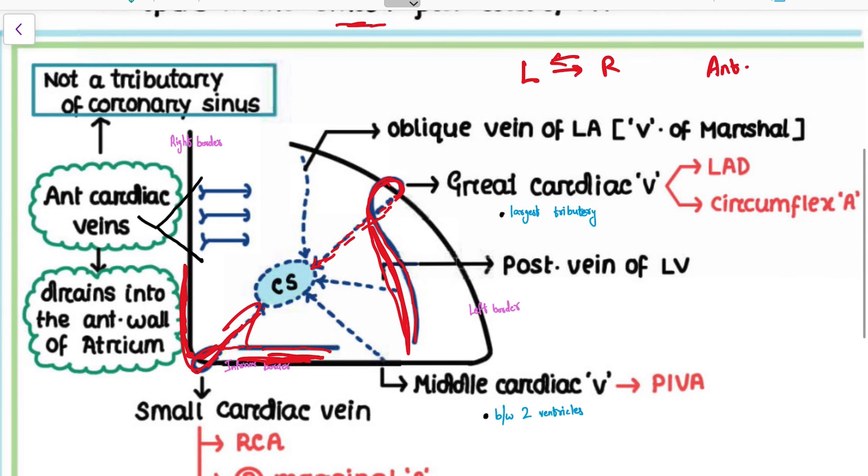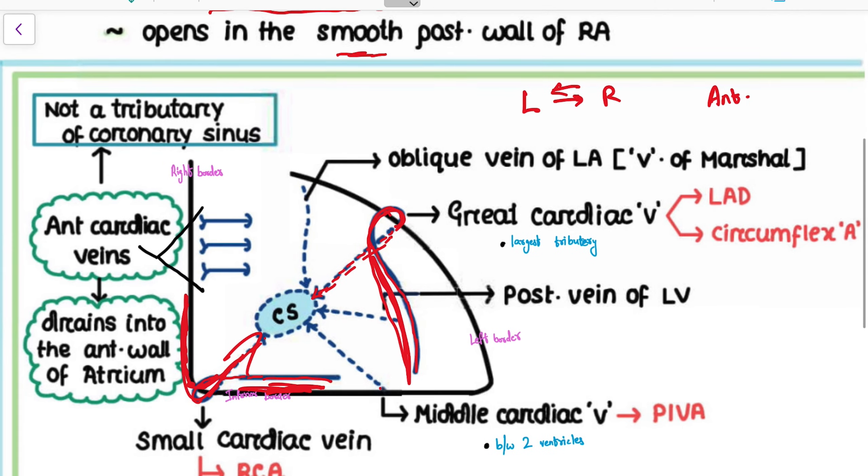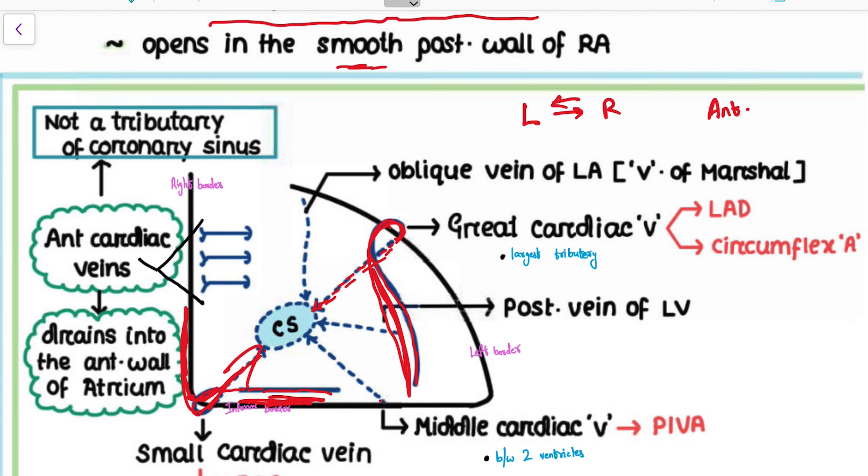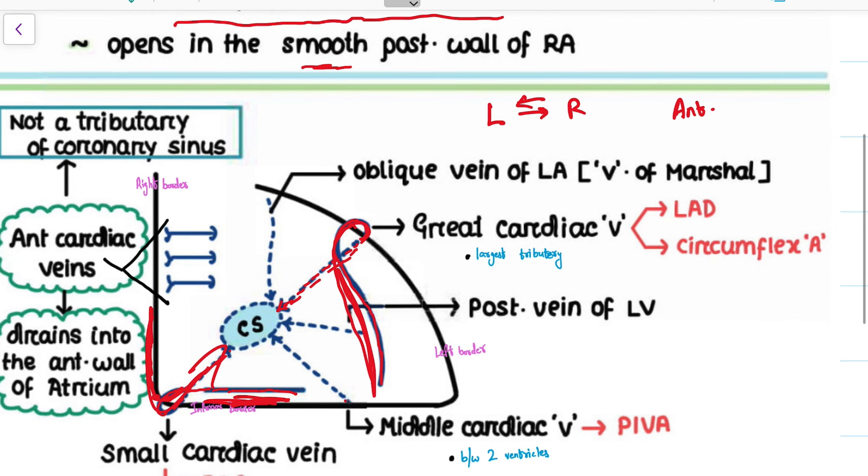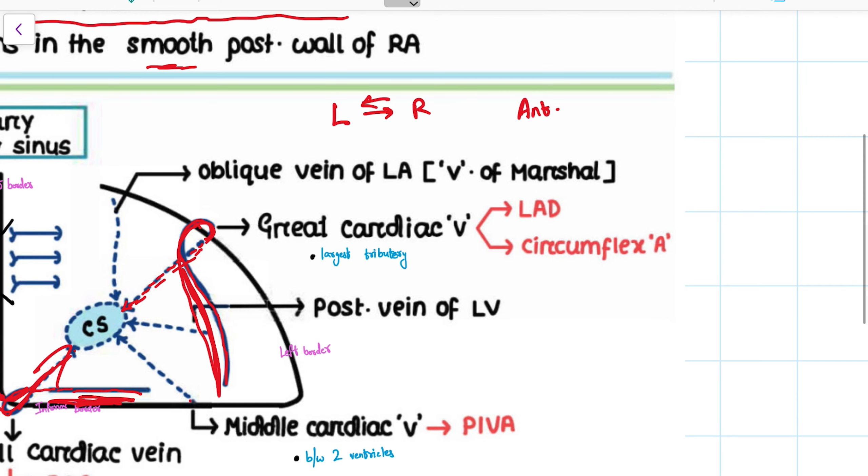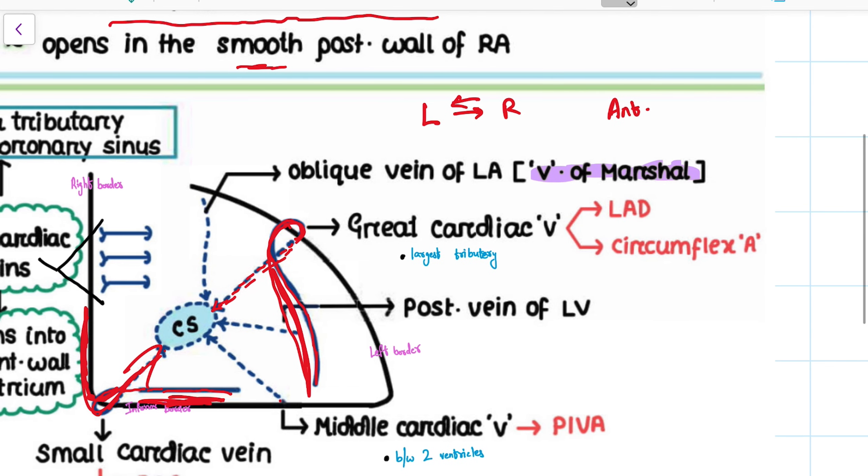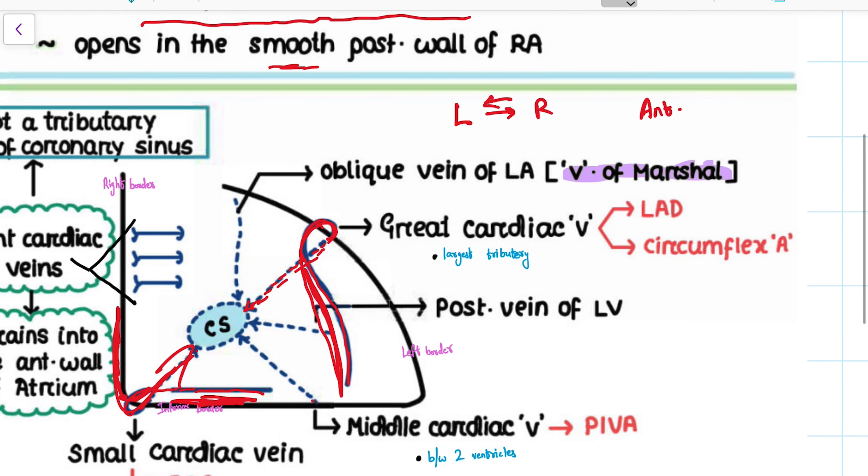And then we have the middle cardiac vein, which is present in the posterior aspect and drains into the coronary sinus. And then there are certain veins which aren't present in any groove, such as the posterior vein of the left ventricle and the oblique vein of the left atrium, which is otherwise known as the vein of Marshall. It is an important MCQ question. What is the vein of Marshall? That is the oblique vein of the left atrium.